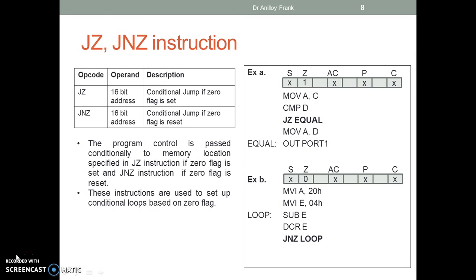JZ and JNZ instructions: JZ is a conditional jump if the zero flag is set. JNZ is a conditional jump if the zero flag is reset. The program control is passed conditionally to the memory location specified in the JZ instruction if the zero flag is set, and the JNZ instruction if the zero flag is reset. These instructions are used to set up conditional loops based on the zero flag.